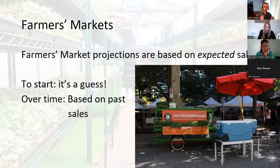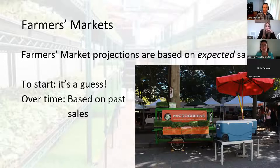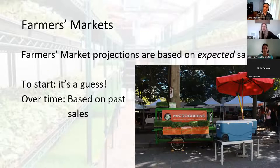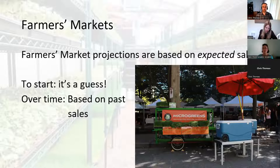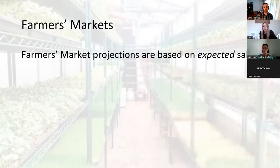As you do more and more markets, you base your expected sales on your past sales. You can only sell as much as you bring, so start by growing and bringing what you hope to sell. If you want to make $500 a market, you need to bring $500 worth of product. If you bring too little, you might sell out too quickly. There's a saying at the farmers market: it's better to sell out than to pack out — but really, your goal is to sell out 15 minutes before the market ends. It's really important to record your actual sales so you know what you're doing.